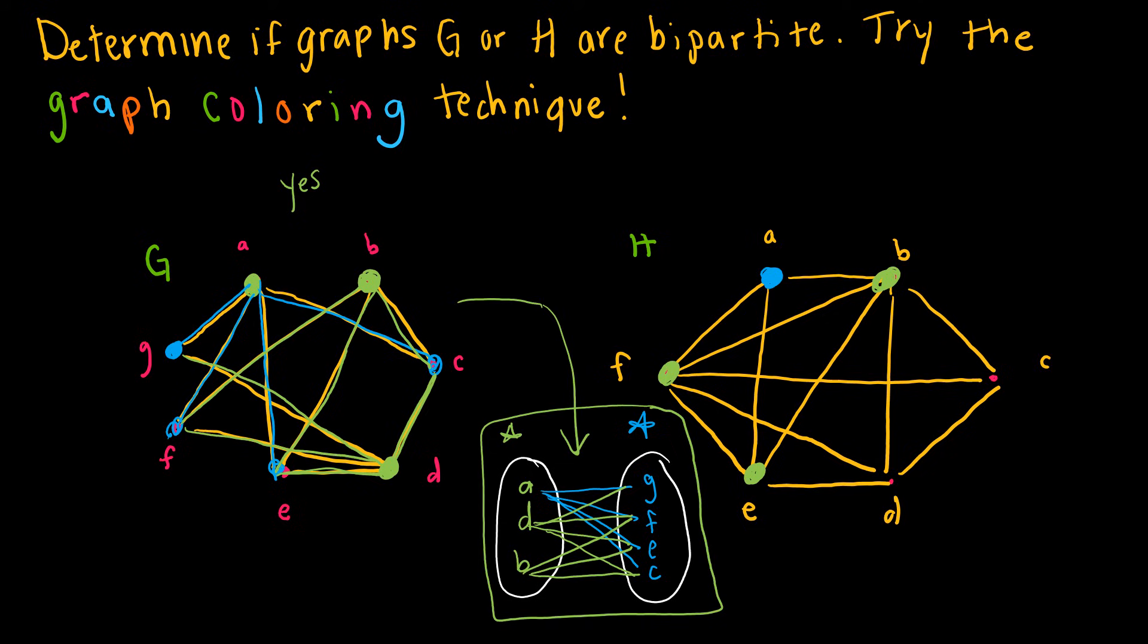What I need to do now before I continue to color any other vertices is determine, are B, F, and E connected directly to one another? We can see that they're all connected to one another. I don't even have to continue checking. This is for sure a no because all of those green vertices cannot be connected to each other if it's bipartite.